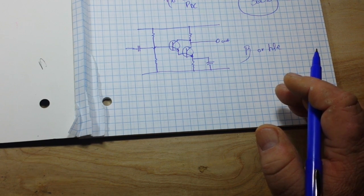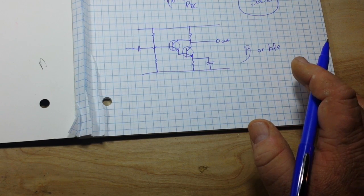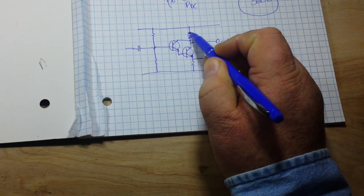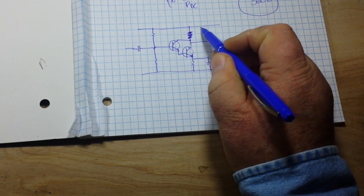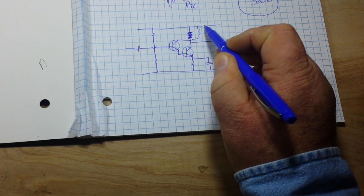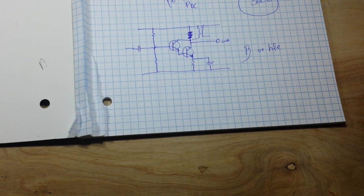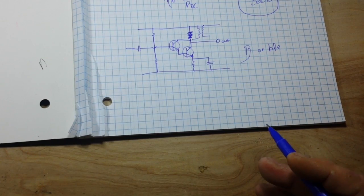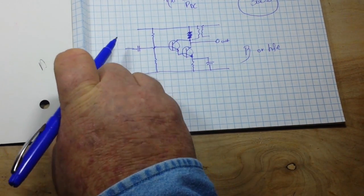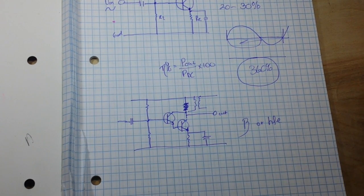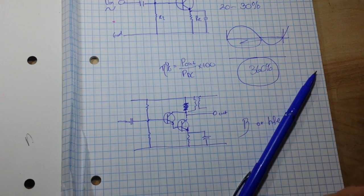Now, there are ways that we can improve the efficiency of this amplifier. One of those ways is to remove this resistor here and instead add a transformer — that is called a transformer coupled amplifier. That is another way we can improve this, but there are better ways, and one of those better ways is to use a different type of amplifier. We are going to get into that in tomorrow's video, because I think that is enough for today. The class A amplifier: lots of gain, not much efficiency.